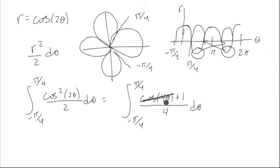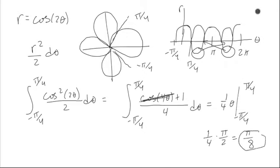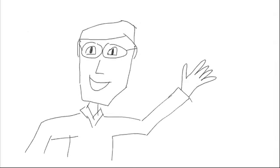So we're just taking the integral of a fourth which is a fourth theta negative pi fourths to pi fourths which is just one fourth times pi halves which is pi eighths, the area of one petal. So thanks for watching!